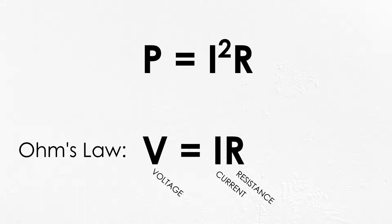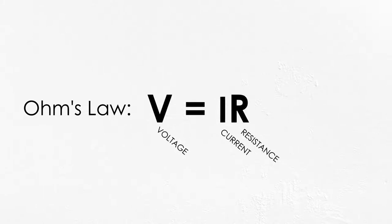So if we want to reduce the losses in a power line, we have two variables to play with. We can reduce the resistance of the conductor by increasing its size or using a more conductive material, but look at what matters more, the I-squared term. Reducing the current by half will cut the lost power to one-fourth, and so on. Going back to Ohm's Law, we can see that the only way to reduce the current and still get the same amount of power is to increase the voltage. So that's just what we do.